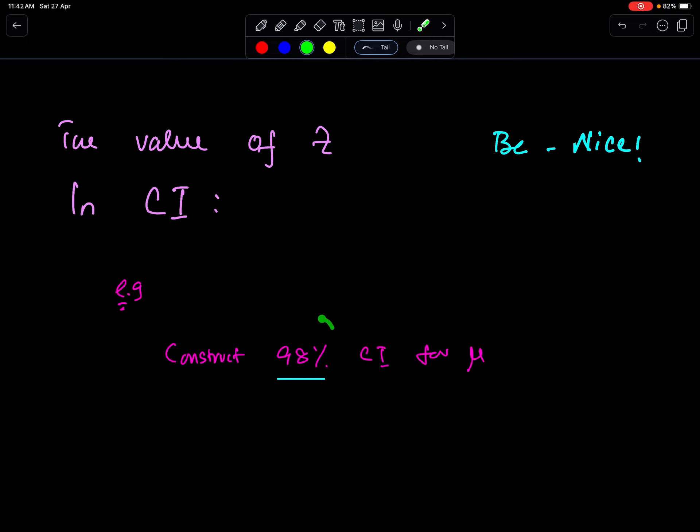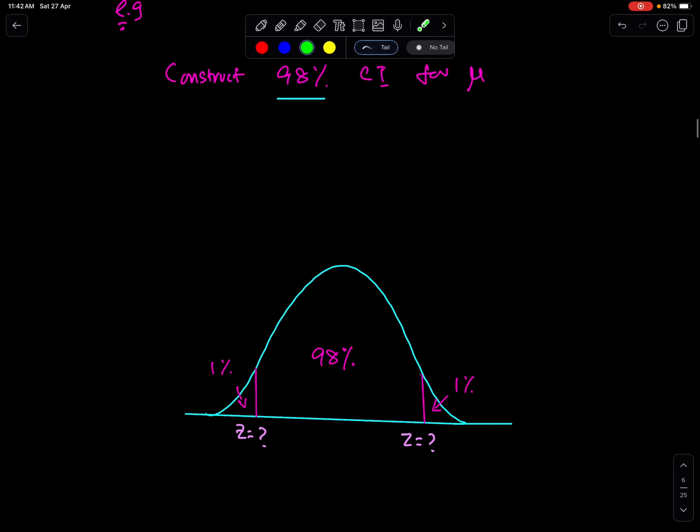But in this example we have 98%. So 98% is here and 1% and 1% here. We need these values of Z. Both are same values, just change in sign. This is positive and this is negative. Now how will we find this value of Z?